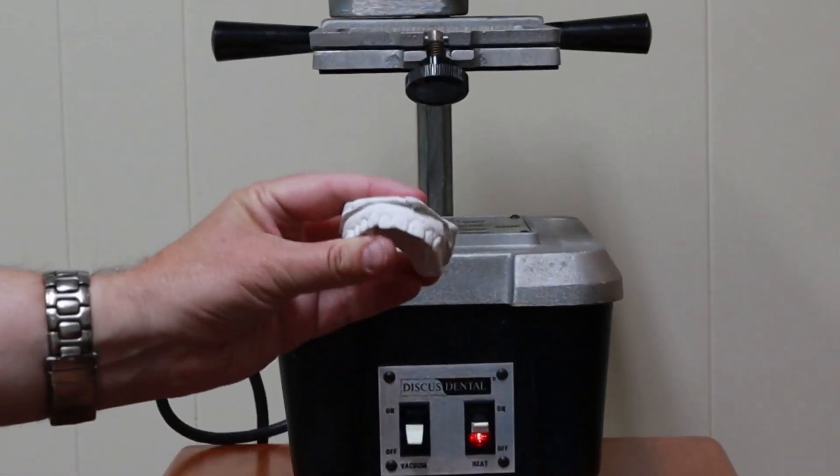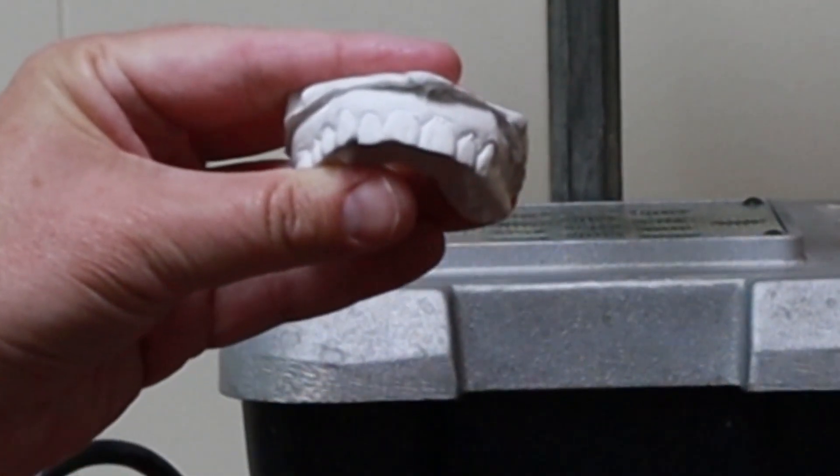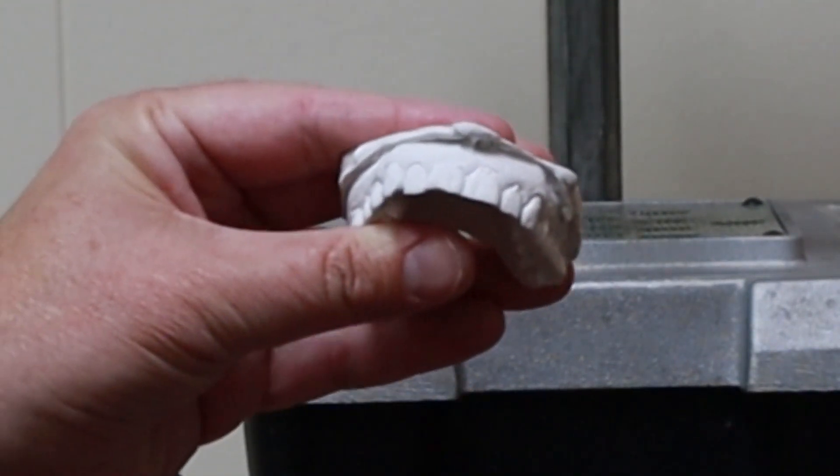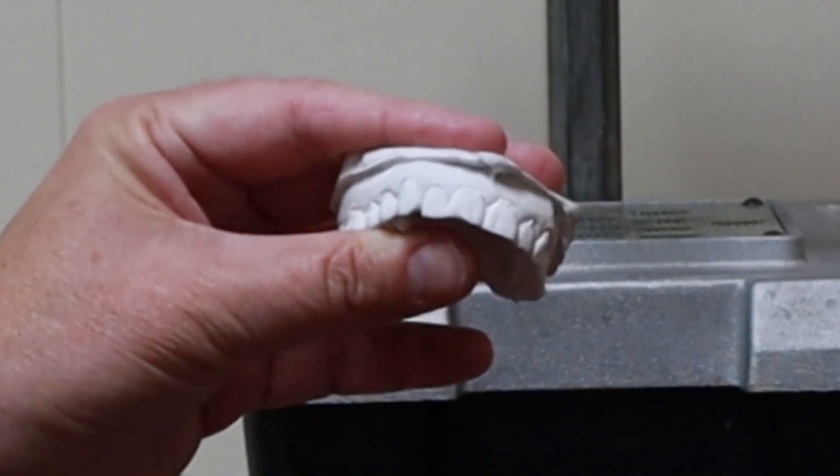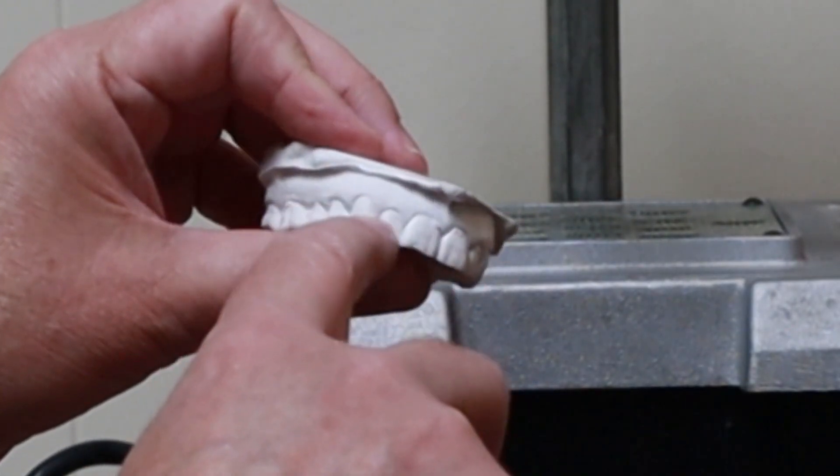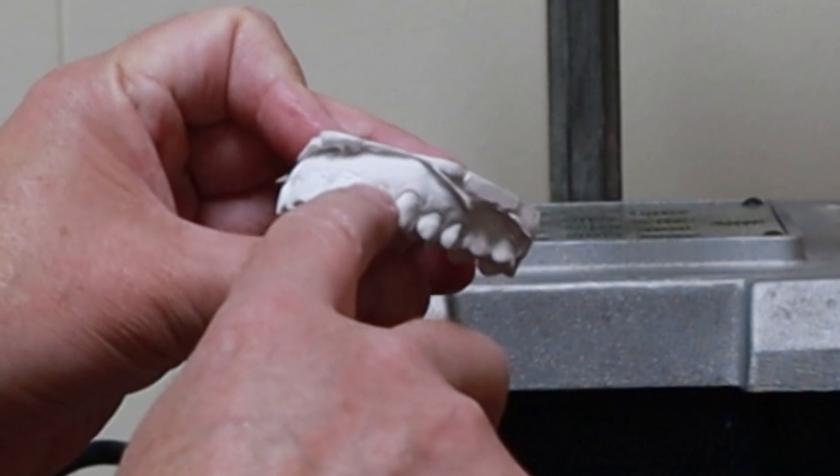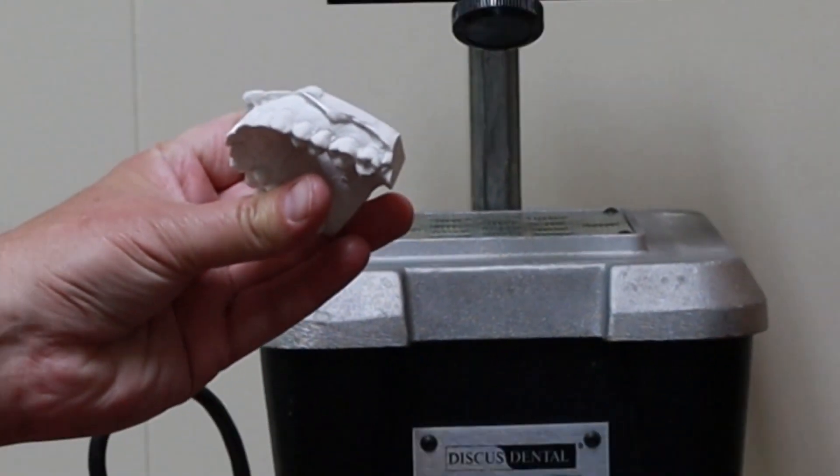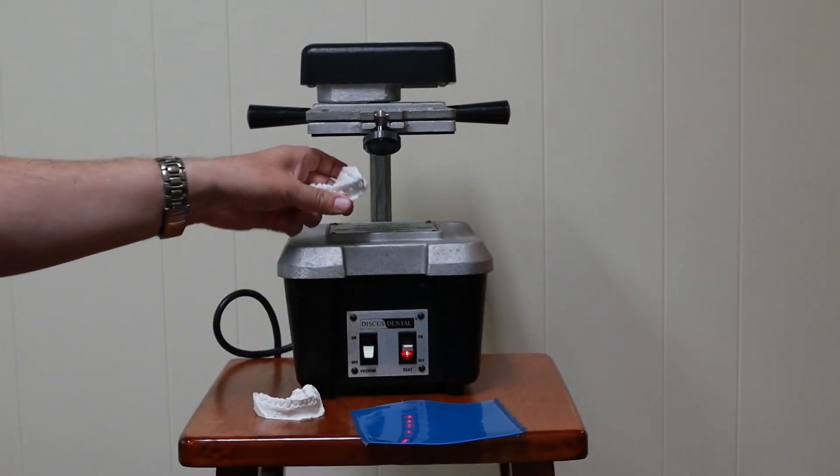One thing that I do that I learned from Dr. Rod Kurthy, the dentist behind Core whitening products, is taking a dull instrument and gently tracing over the gum line. That way you'll see a line on the plastic when you go to trim it.